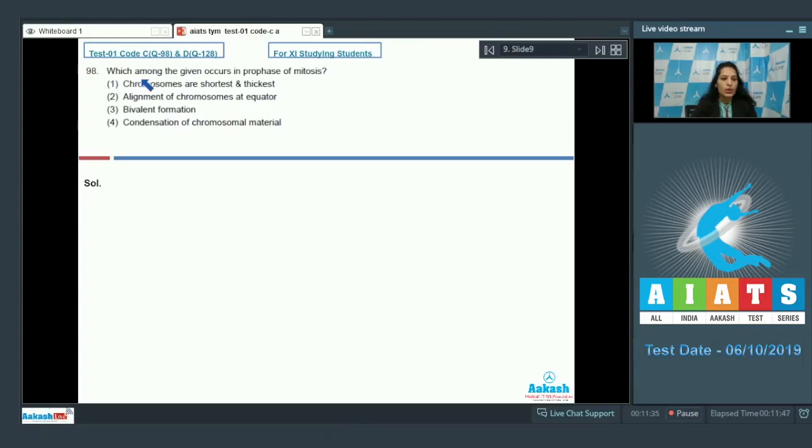Question number 98: Which among the given occurs in prophase of mitosis? Chromosomes are shortest and thickest in the metaphase stage. That's why the metaphase stage is the best stage to study the morphology of the chromosomes. Alignment of chromosomes at equator? No, again metaphase. Bivalent formation? It occurs in the prophase one of meiosis. Condensation of chromatin material? Yes, condensation of chromatin material takes place in the prophase. Hence the correct option for the given question is option number four.